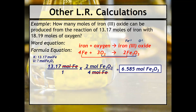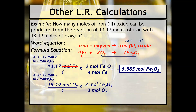With any limiting reactant calculation, we also have to do a second calculation. We'll start with 18.19 moles of O₂, still going to moles of iron 3 oxide. Our mole ratio is now between the oxygen and the iron 3 oxide, and then we have our moles of O₂ canceling. We get 12.13 moles of iron 3 oxide.